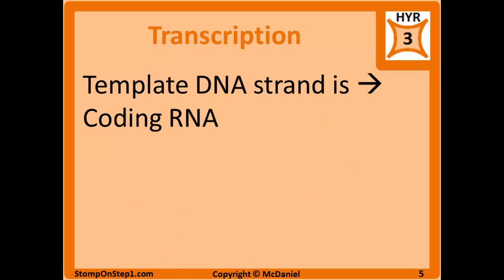Transcription is converting the template DNA strand into coding RNA. The RNA is going to be complementary to the DNA. The only real difference is it's going to be single-stranded most of the time rather than double-stranded, and it's going to have the U nucleotide substituted in for the T nucleotides. In eukaryotes, RNA polymerase 1 makes ribosomal RNA or rRNA, 2 makes messenger RNA or mRNA, and 3 makes tRNA.